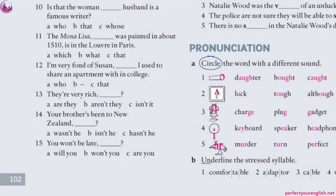Number 13: 'They're very rich, aren't they?' B is correct — tag question. The main verb is 'to be,' so we use 'to be' in the tag. The verb is 'are,' the pronoun is 'they.' The main sentence is positive, so the tag is negative: 'They are → aren't they?'